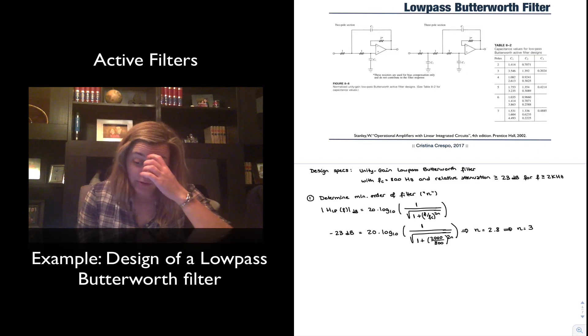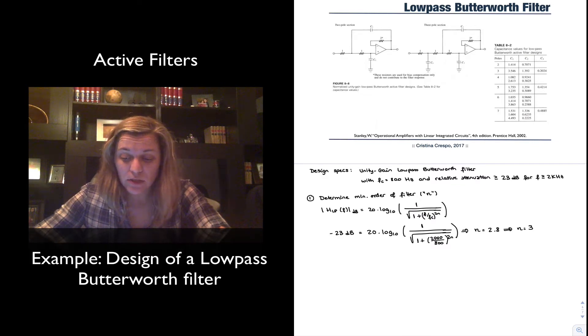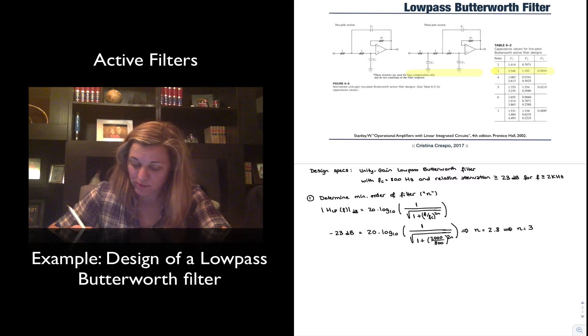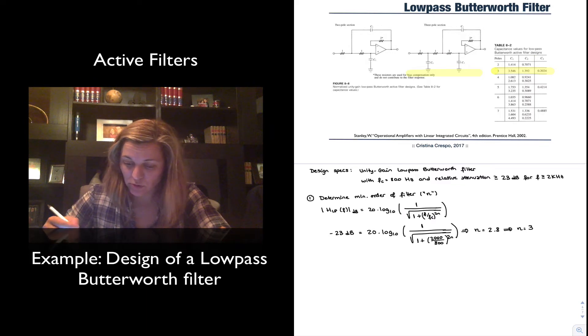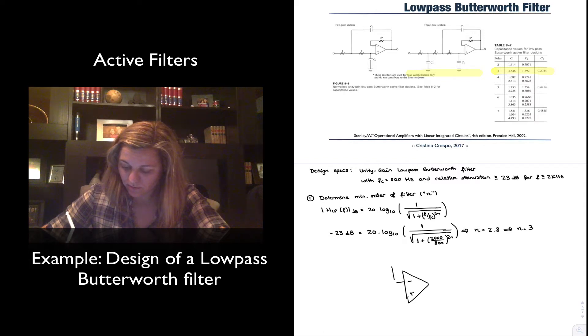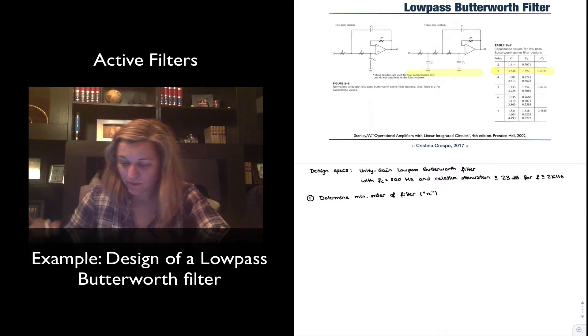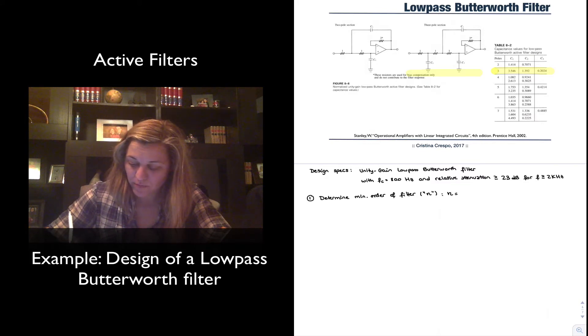So for a third order filter we are basically going to use the three-pole section, and so this one right here, and these are the values of the capacitors that we need. So if I were to sketch my prototype down here it will basically be that circuit with those capacitor values. And I probably need a little bit more room for that. So what I'm going to do is I'm going to delete this and just keep in mind my n equals 3. Basically I have done the calculations and I have come up with n equals 3.